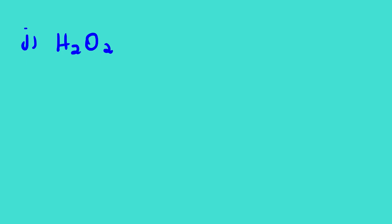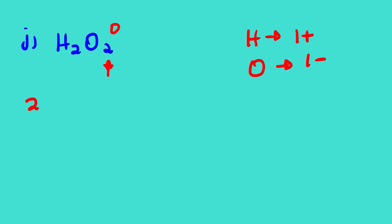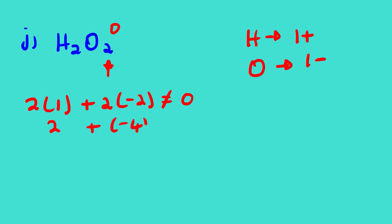Example 10: H₂O₂ (peroxide). Hydrogen bonds with a nonmetal here, so hydrogen is 1+. Oxygen is in a peroxide, so it is 1− (not 2−). We can verify: if oxygen were 2−, we would get 2(1+) + 2(−2) = 2 − 4 = −2, which does not equal zero. So oxygen must be 1− so that 2(1+) + 2(−1) = 0.